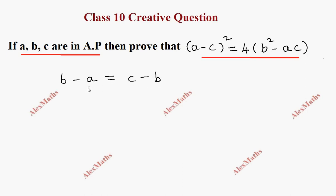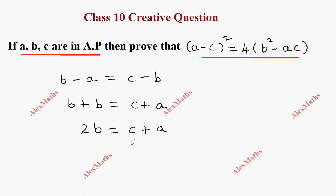So, if B minus A equals C minus B, then B plus B equals C plus A, which gives us 2B equal to C plus A. Therefore, B equals (C plus A) by 2.